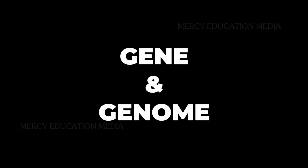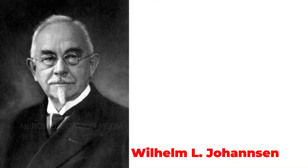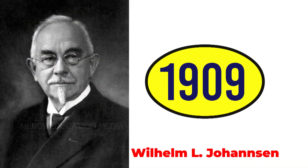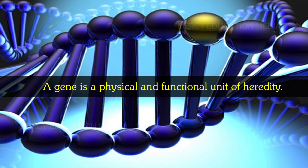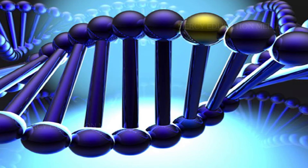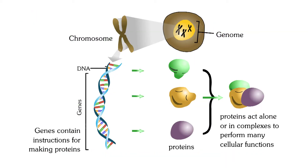What are gene and genome? The word gene was coined by W. Johansson in 1909. A gene is a physical and functional unit of heredity. It carries information from one generation to the next. Gene is also defined as a nucleotide sequence that is responsible for the production of a specific protein.